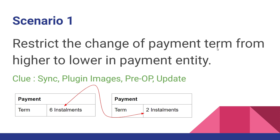For this you have to use a synchronous plugin and you have to use plugin images. When you are doing some operation on a form field, you need to match the before value and after value of that field. You need to use plugin images to find out what is the old value and what is the new value of the term. Without plugin images, there is no other way to match the previous value of a field.